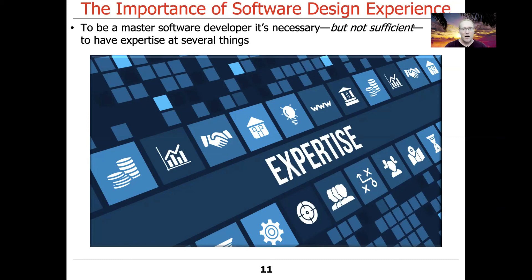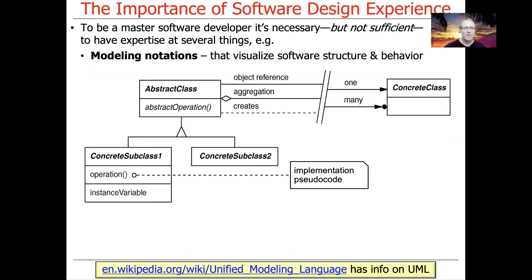Now, if you want to become a master software developer, it's necessary but not sufficient to have expertise with a number of things. One thing it helps to be expert at is how to understand or draw notations of your software designs. Nowadays we use things like the Unified Modeling Language, UML, in order to capture the common roles and relationships between elements in our software, showing the software structure and its behavior. UML is very common — you're likely to see it in books, in reverse-engineered code from things like JavaDocs, and it allows you to show the structure of your software.